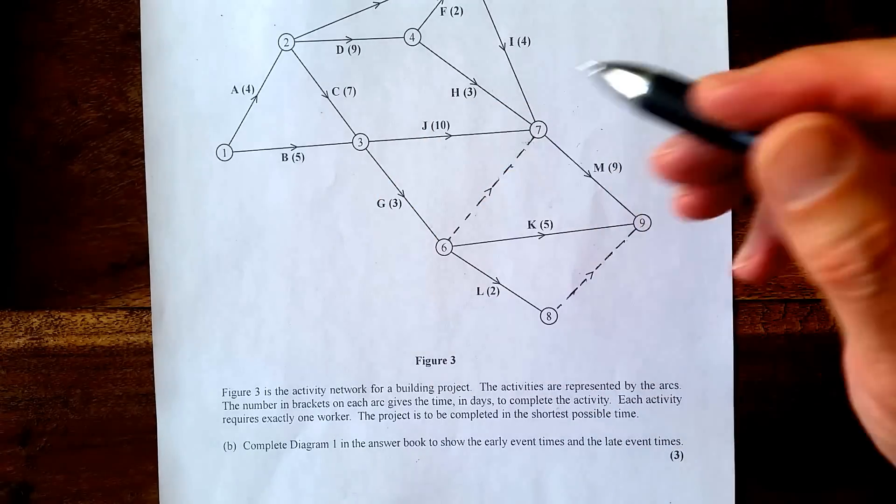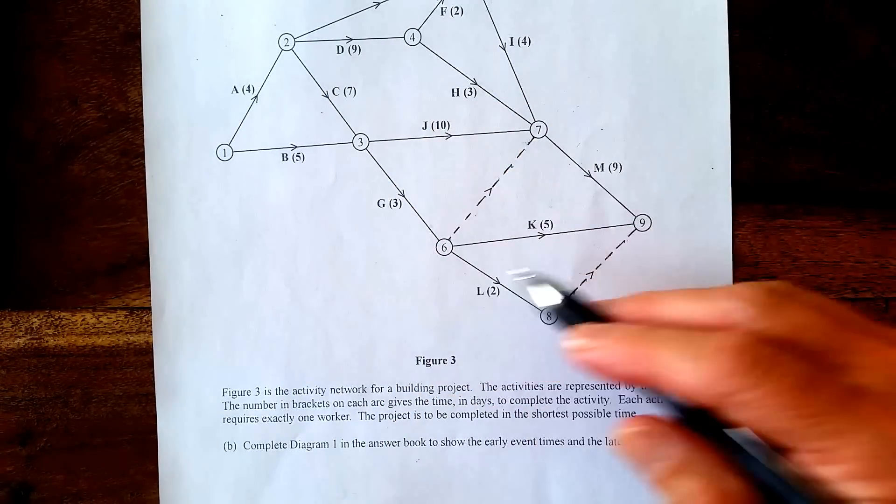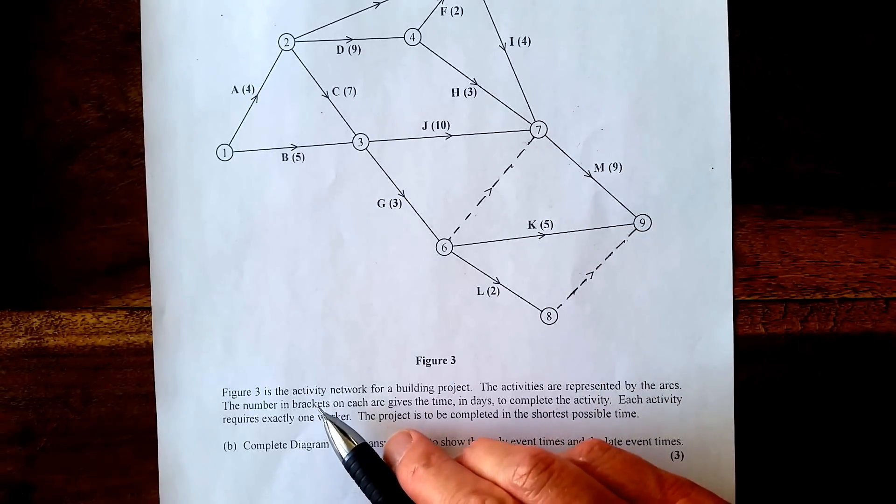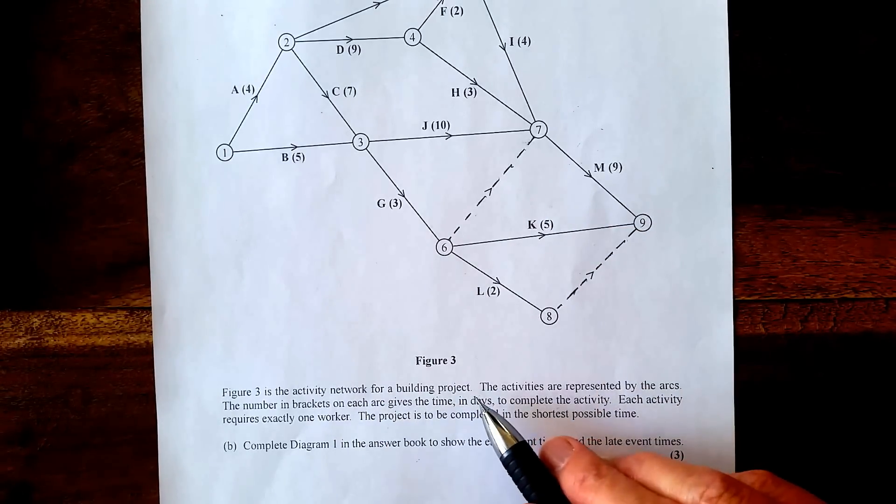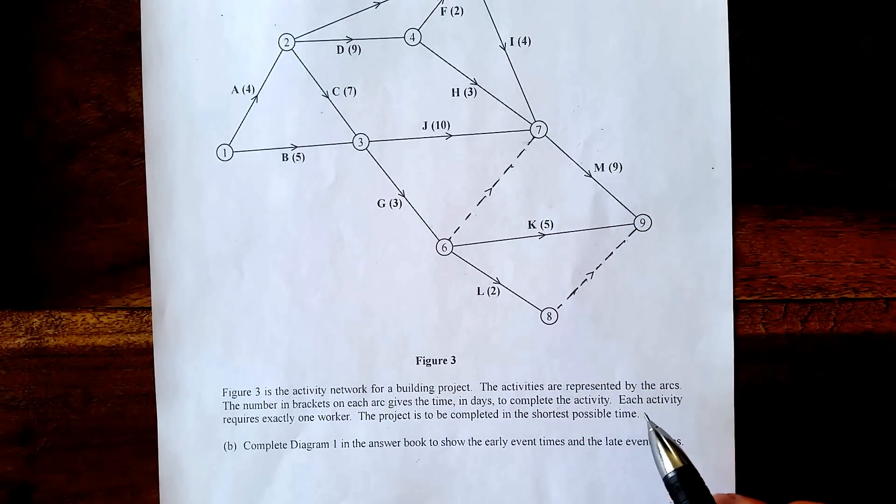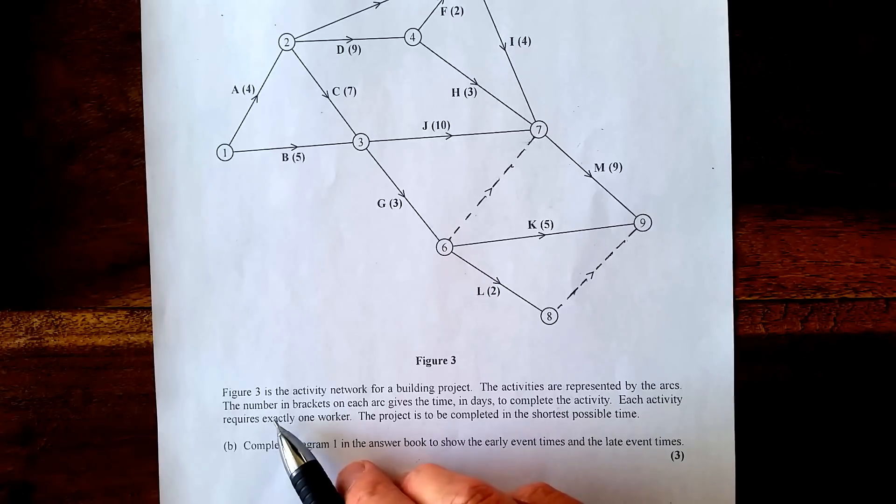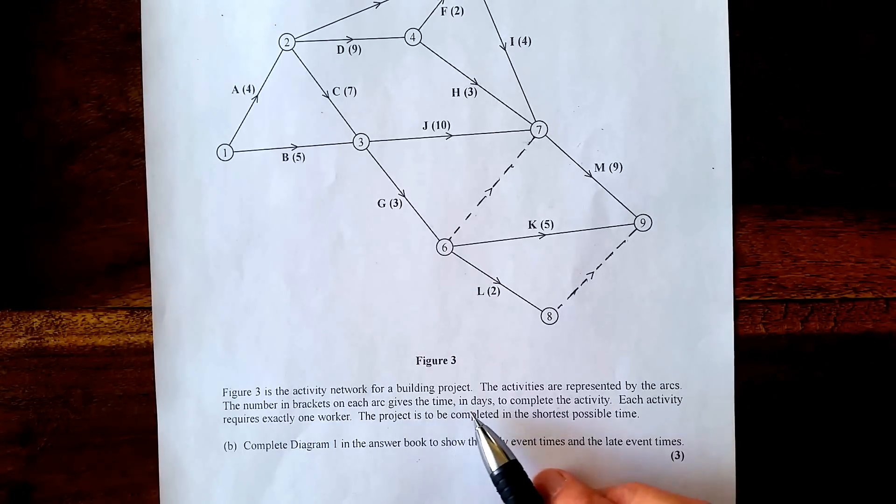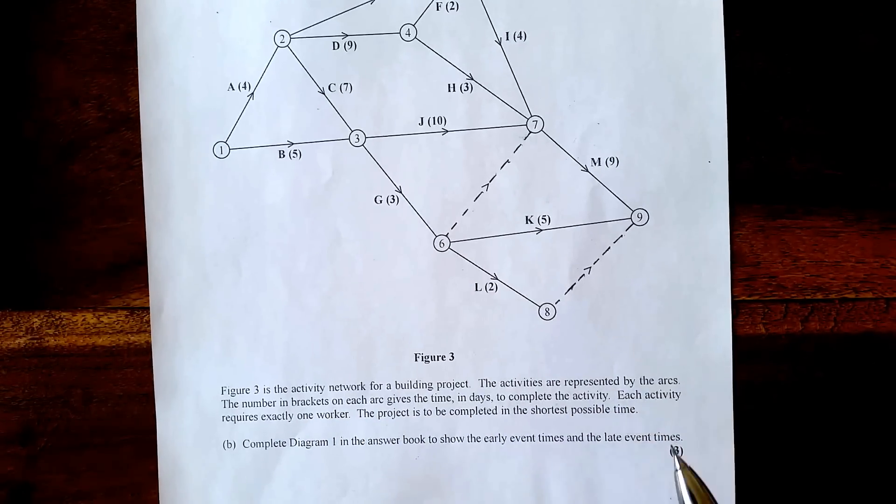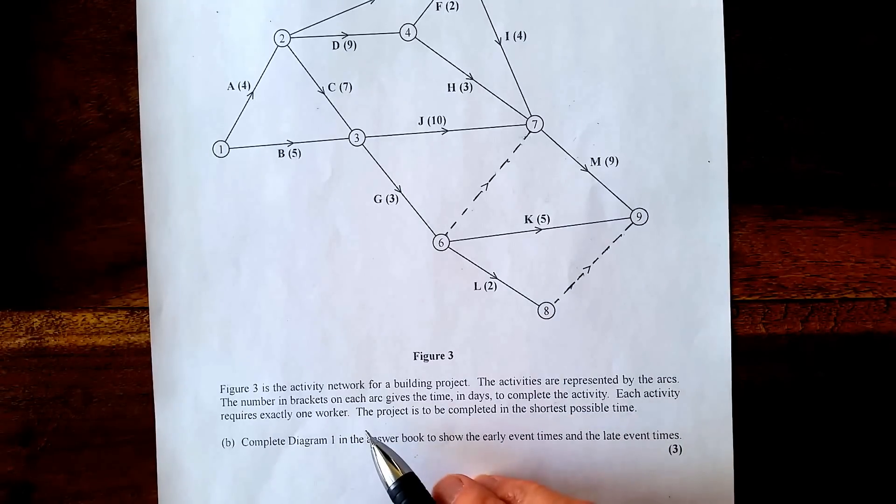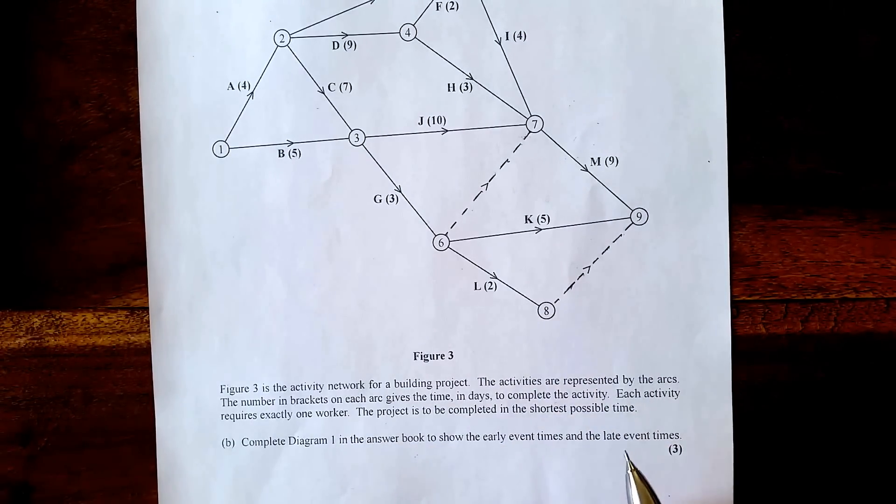Part B says it's an activity network for a building project. The activities are represented by the arcs. The number in brackets on each arc gives the time in days to complete the activity. Each activity requires one worker. The project is to be completed in the shortest possible time.